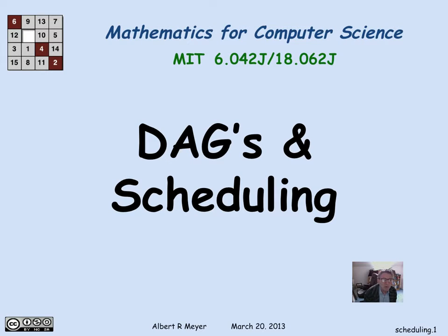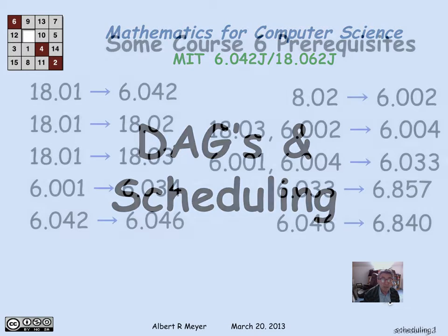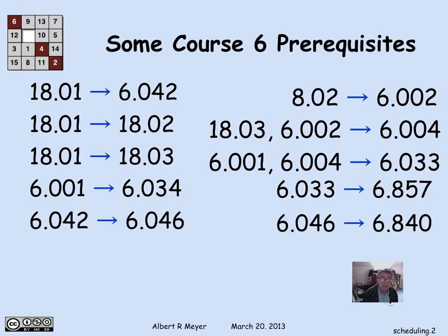So we saw in the last video why if you represent scheduling constraints among courses by a digraph, that it's critical that that digraph in fact be a DAG. And let's now look at this scheduling issue represented by DAGs in more detail.